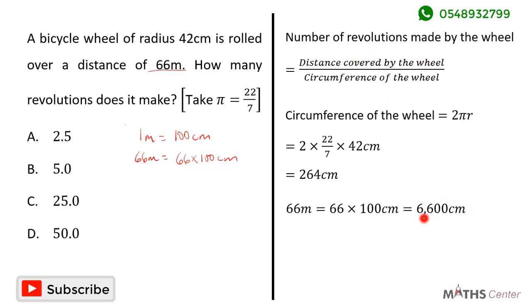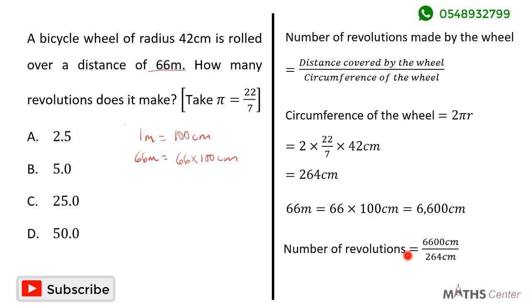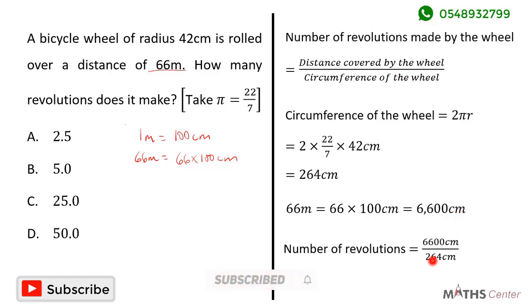So the total distance covered by the wheel is 6600 centimeters and the circumference is 264 centimeters. The number of revolutions is equal to 6600 centimeters divided by 264 centimeters, and this gives us 25. So the number of revolutions the wheel makes is 25. When we look through the options we can see that the correct option is C.